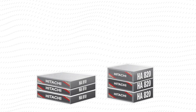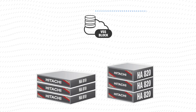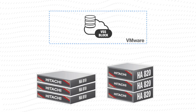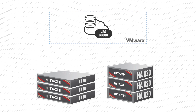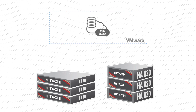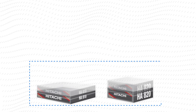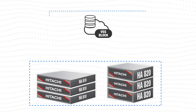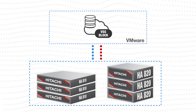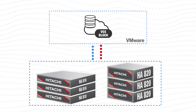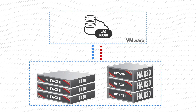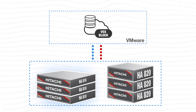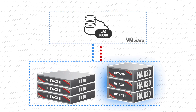VSS Block runs on general-purpose servers or commodity servers, and the software runs as a virtual machine on the underlying hypervisor. Because the hypervisor interacts directly with the hardware layer, VSS Block is more flexible and mostly independent of the underlying hardware. Currently, Hitachi Advanced Servers HA810 and HA820 are supported.